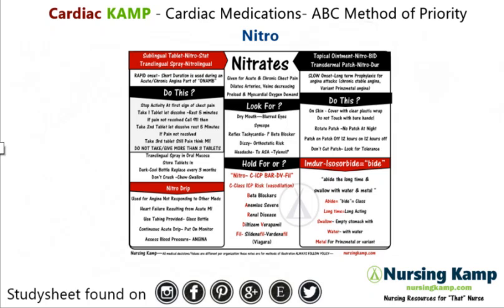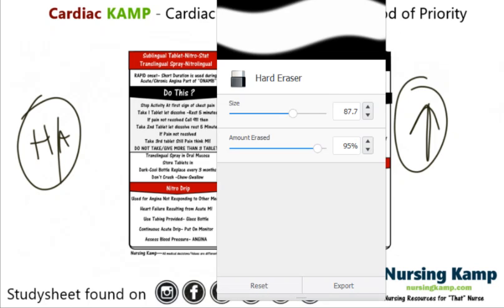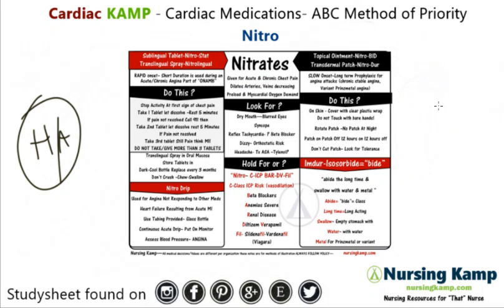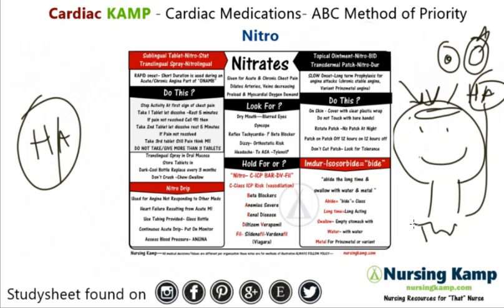Side effects to watch for include dry mouth, blurred vision, syncope, and reflex tachycardia. An expected finding is a headache — the reason is that up in the brain it's a closed system with no place to go. Because nitro causes vasodilation, it causes increased pressure in that closed space, resulting in a headache. You treat that with Tylenol or acetaminophen.